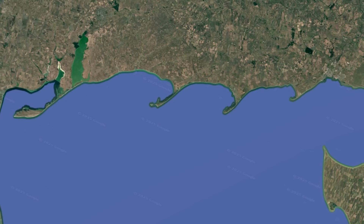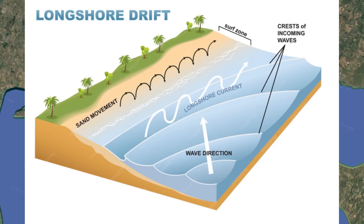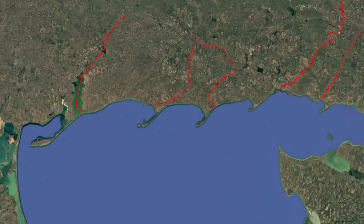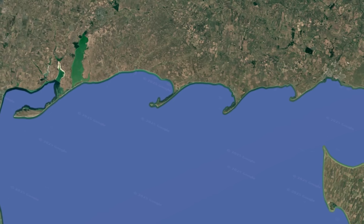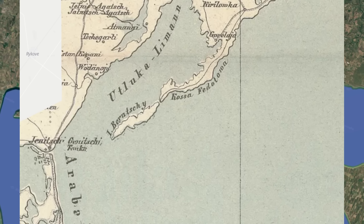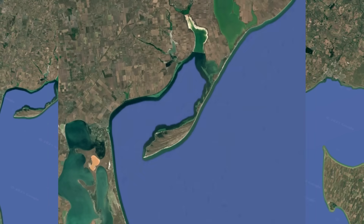To recap, these peninsulas that jut out into the Sea of Azov were formed from a process known as longshore drift. In this process, sand is picked up from the coast and moved along the shore through the longshore current. However, this current reached spots where rivers had deposited sediment and thus slowed down, and this slowing caused sand to be deposited and created the long spits that we see today.